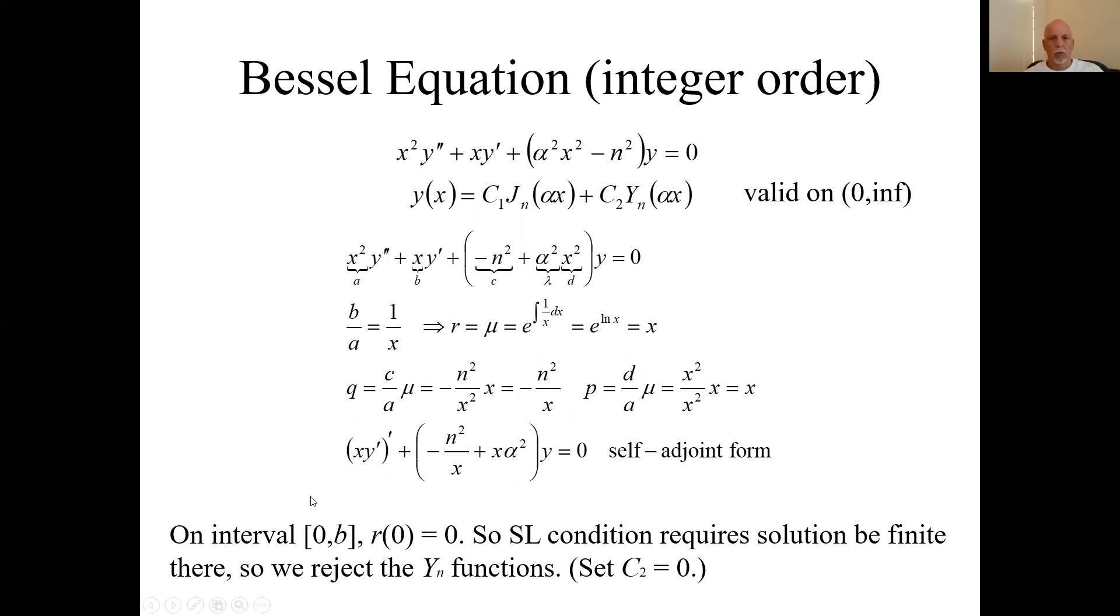On some finite interval, we're going to be interested in not all the way to infinity, but from zero to some finite limit B. On this interval, notice at the endpoint zero, where was R? R was x. R at zero is zero. So we're going to require boundedness at x equals zero.